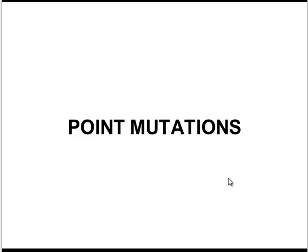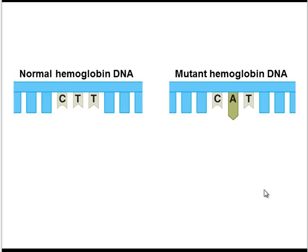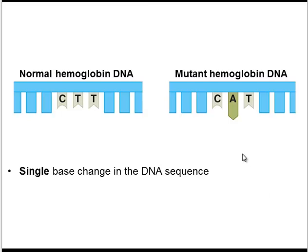Now let's take a look at point mutations. These are smaller scale mutations, but they can still have very large impacts. A point mutation is simply a single base change in the DNA sequence. Here is part of the DNA from the hemoglobin gene. Note that one of the codons is CTT. Here is a mutant gene for hemoglobin — one single base has changed from T to A. This is a point mutation.